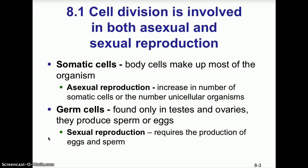Cell division is involved in both asexual and sexual reproduction. Somatic cells are body cells that make up most of the organism — like your skin cells, cardiac cells, and muscle cells. In sexual reproduction a special type of cell division is involved, but in asexual reproduction you increase the number of somatic cells or unicellular organisms.